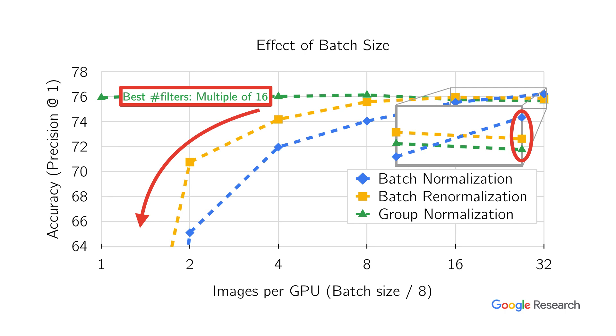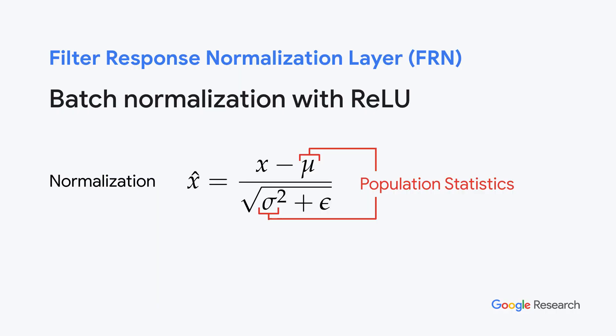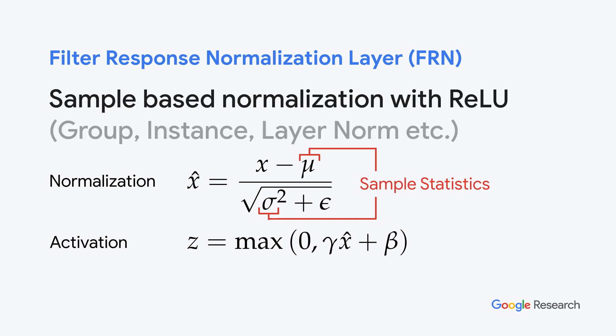As we will see, our method addresses these issues while outperforming all these methods. As we saw earlier, batch normalization uses estimates of population statistics to normalize. Normalized activations are then transformed using a scale and offset followed by the ReLU nonlinearity. In contrast, sample-based normalization methods get rid of the problematic batch dimension and use statistics computed from the sample itself. Note that the equations are essentially the same, with the only difference in the set of activations over which the normalization statistics are computed.